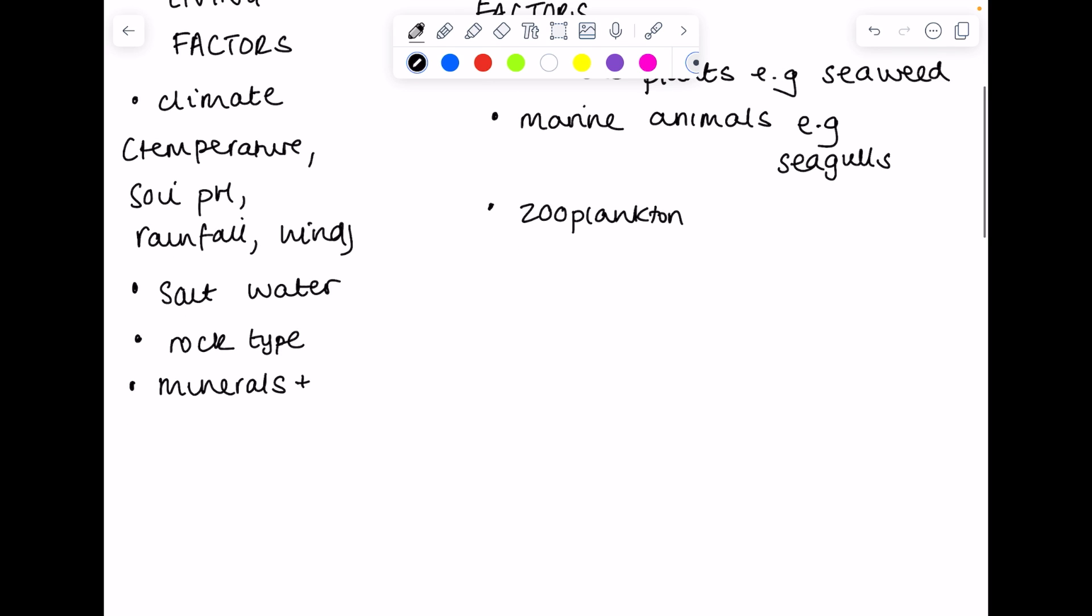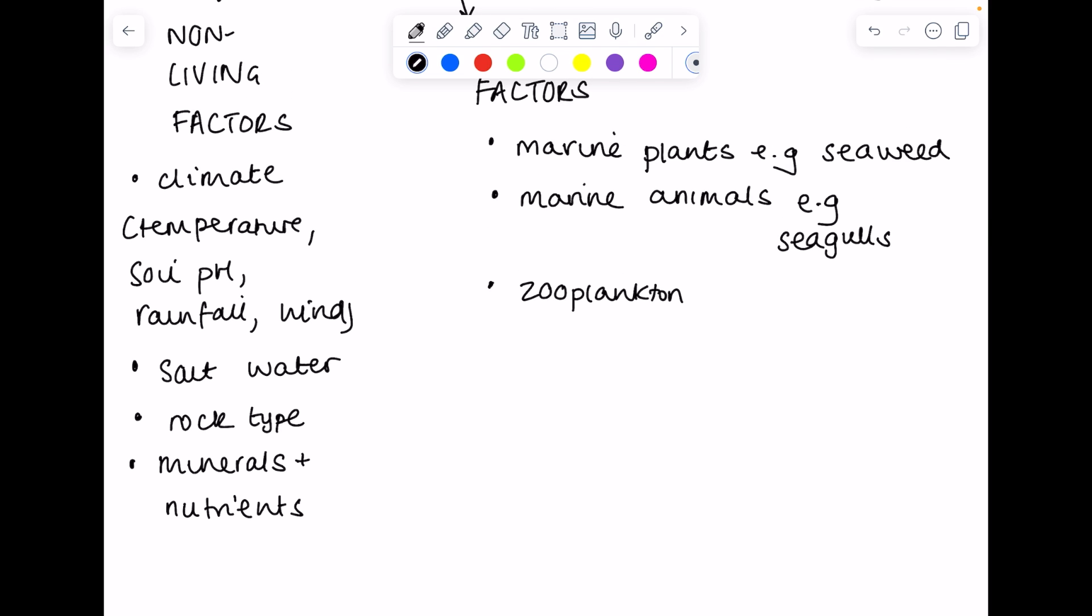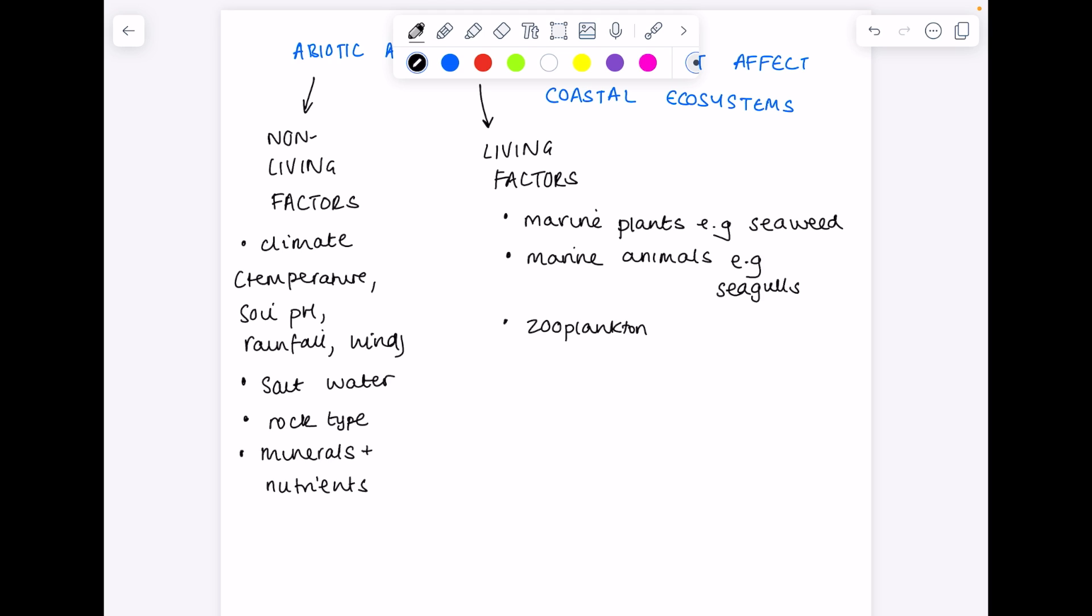You can absolutely see this division between biotic living and non-living factors which are abiotic. Be prepared to talk about specific coastal ecosystems. For example, if they ask about sand dunes, your living factors would include marum grass, organisms which cause disease to that marum grass, animals burrowing inside the sand dunes. The non-living factors would definitely include climate, temperature, soil, pH, rainfall, wind.